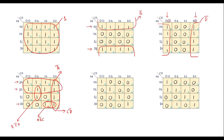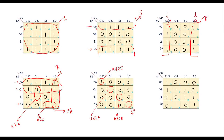Once all 1s are covered, we stop. In a Kmap where 1s are placed diagonally with no adjacent 1s, each must be treated as an independent group. Their values are: A-bar B-bar C-bar D-bar; A-bar B C-bar D; A B C D; and A B-bar C D-bar.